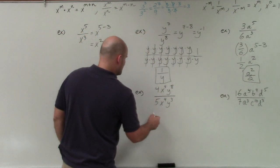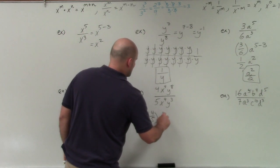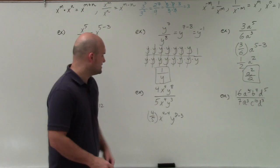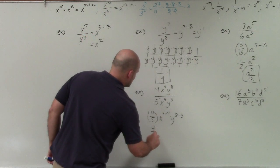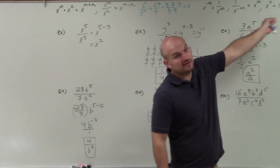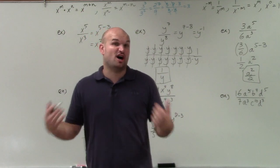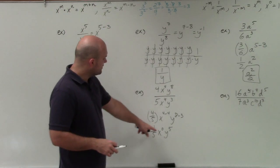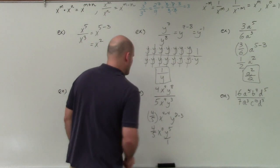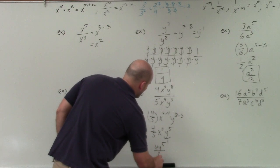Sometimes numbers don't evenly divide, and you just have to leave it. Let's break everything apart: 4 over 5, which can't be reduced; x to the 4 minus 4; and y to the 8 minus 3. That gives me x to the 0 and y to the fifth. Any variable or base raised to the 0 power is always going to equal 1. So therefore x to the 0 equals 1, and we can write our final result as 4y to the fifth divided by 5.